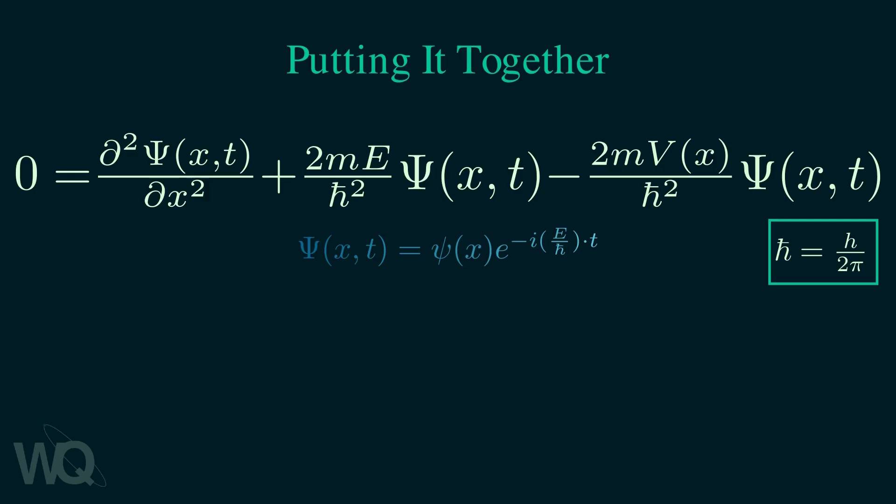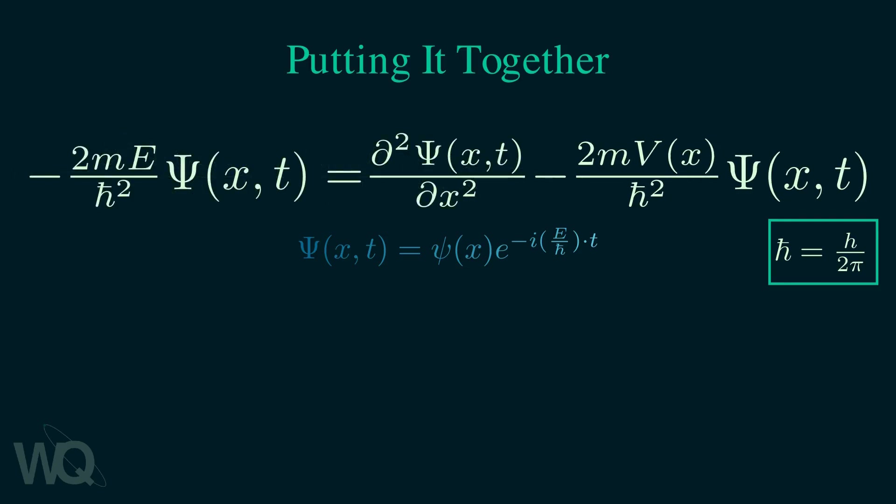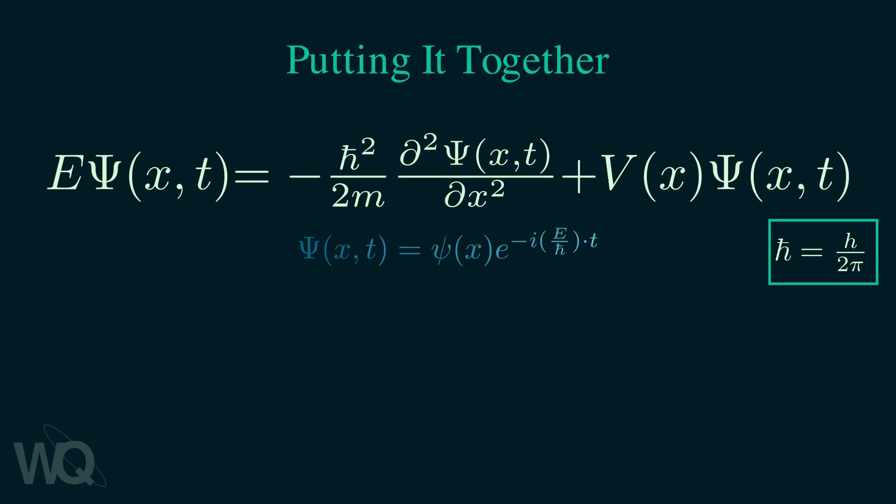Next, we move this term to the other side. If we divide through by minus 2m over h-bar squared, we get the time-independent Schrödinger equation. The name comes from the fact that there are no time derivatives, so you cannot determine how the wave function depends on time.